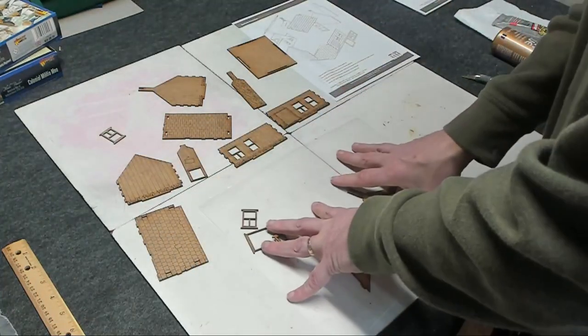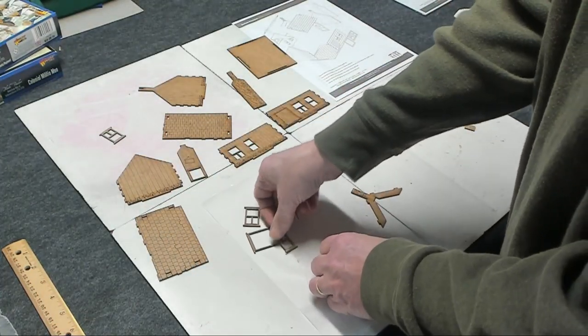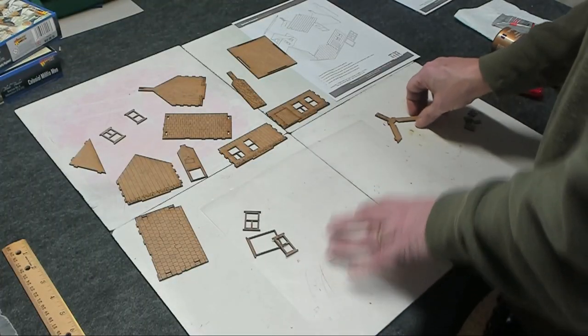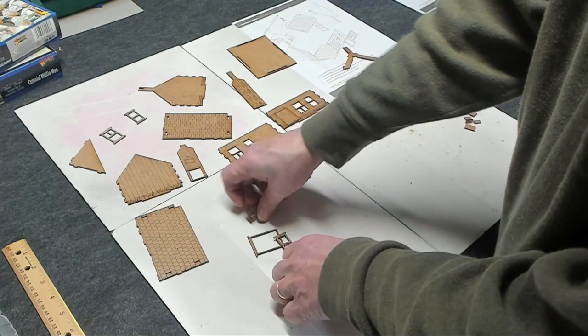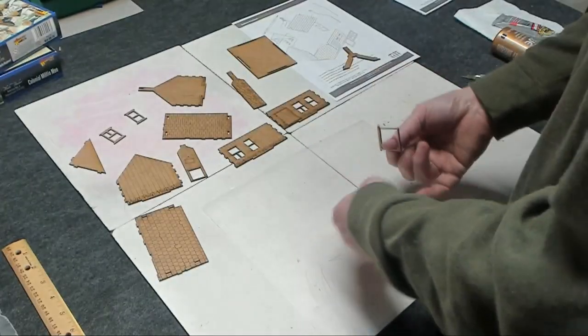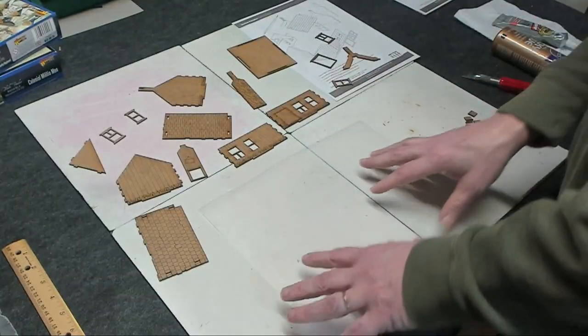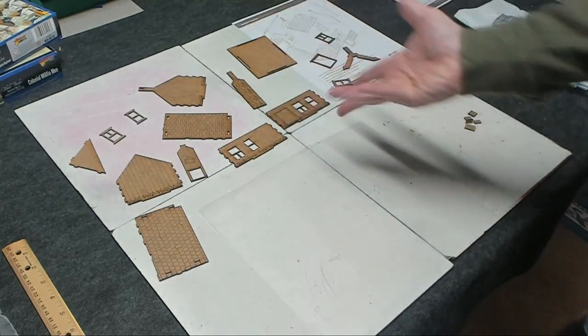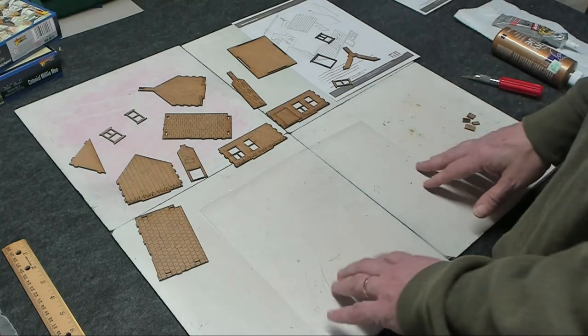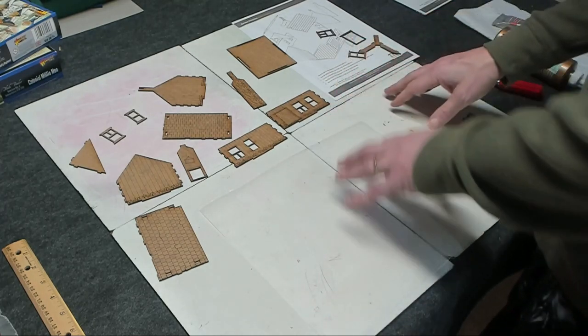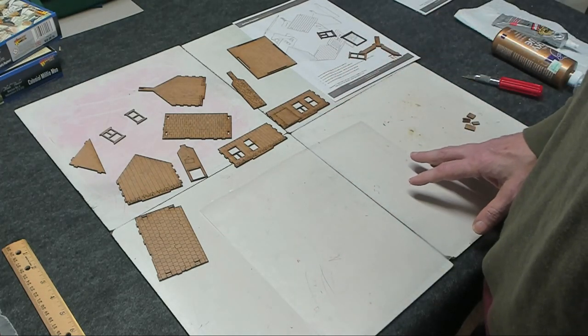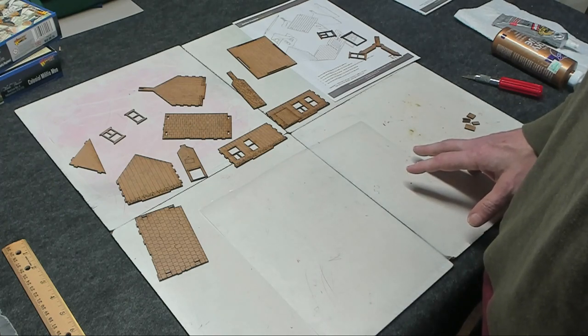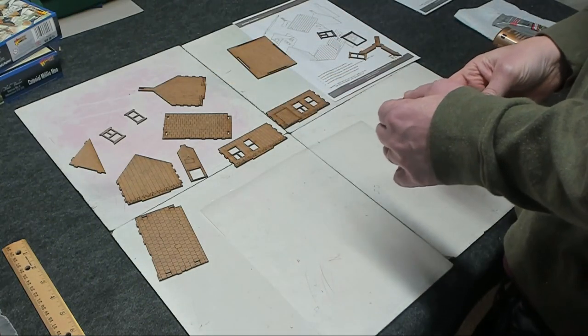It looks like all the things that have slots are all popped out and it looks fairly straightforward. I'm going to be building it on this piece of wax paper. The reason I do that is if I have any glue go from the model to my workbench it won't stick. I'll be able to just peel it off of the wax paper.